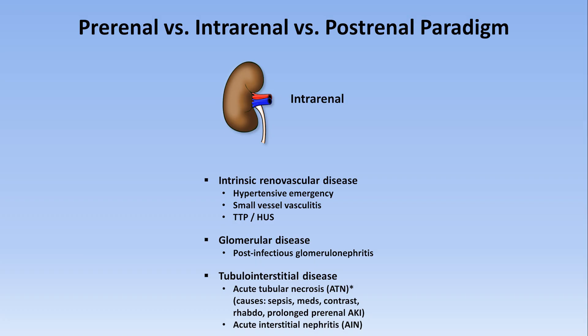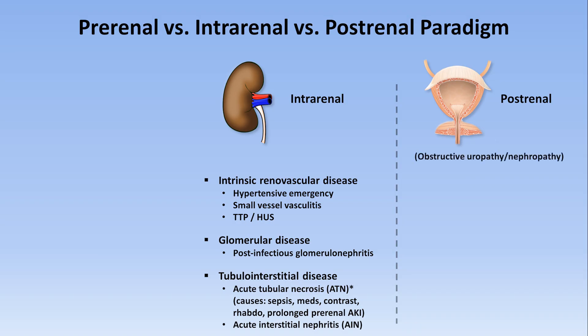In addition to the intrarenal etiologies, there are etiologies that happen downstream of the kidneys within the GU system — this is called post-renal AKI, also known as obstructive uropathy and/or obstructive nephropathy, because they are all consequences of impaired urine drainage. This increases pressure within the ureters, which is then transmitted to the kidneys' collecting ducts and tubules, and ultimately to the individual glomeruli. The obstruction can occur anywhere from the renal pelvis down to the urethral meatus; since the kidneys have largely redundant function, obstructing only one ureter will generally not lead to kidney injury — both ureters usually need to be obstructed.